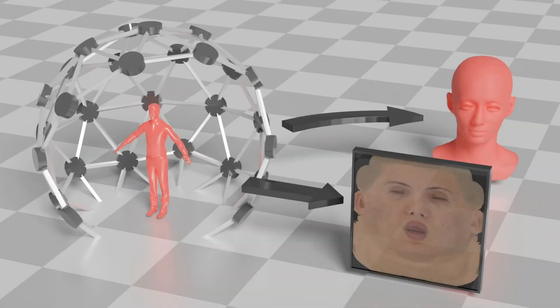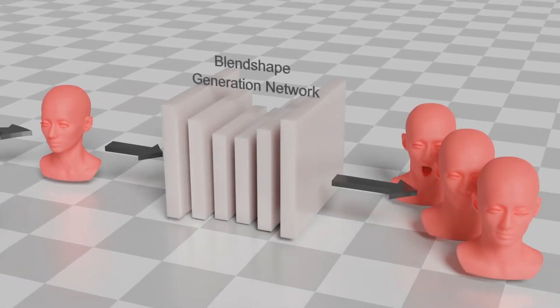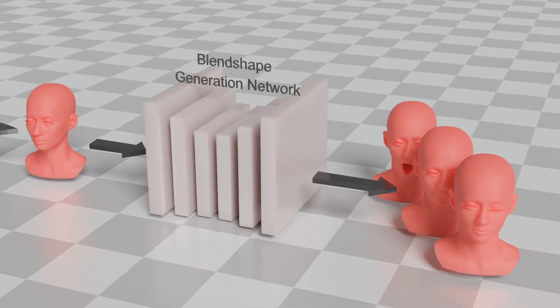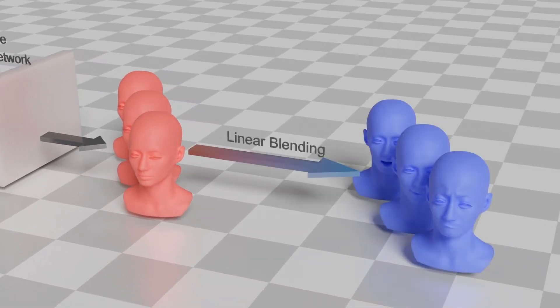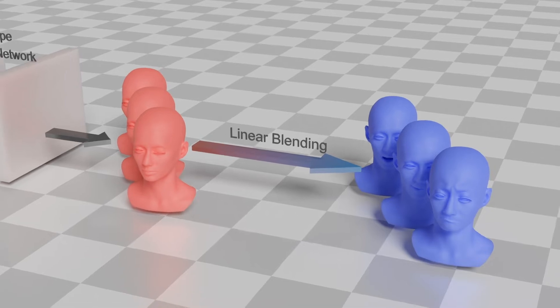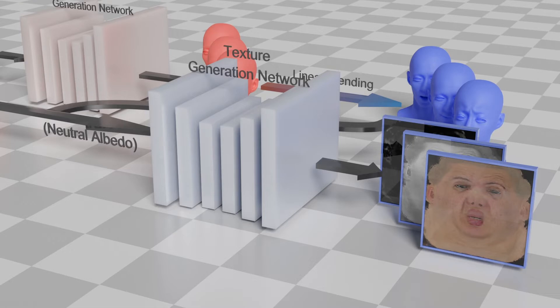Our pipeline takes neutral geometry and neutral albedo map as inputs. First, the neutral geometry is fed into our blend-shape generation network to generate a set of blend-shape geometry. We then use blending weights defined by artists to generate 26 FAX expressions. For each FAX expression, the texture generation network takes the expression geometry and neutral albedo as input to generate physical-based texture assets, including albedo, specular, and displacement maps.